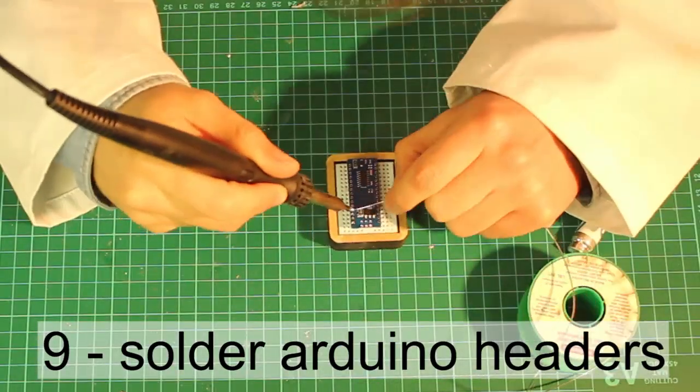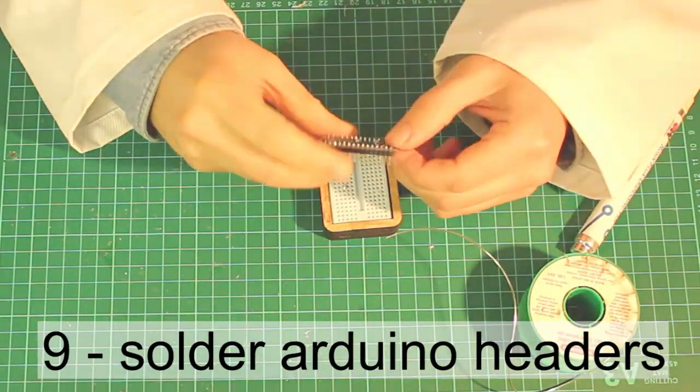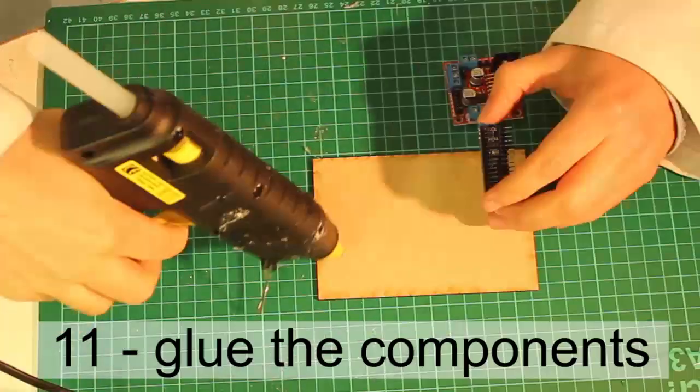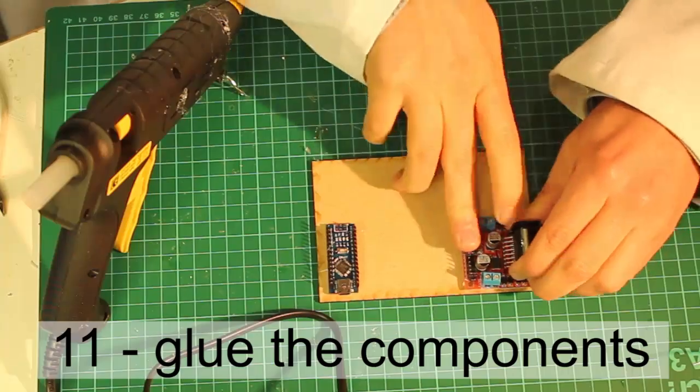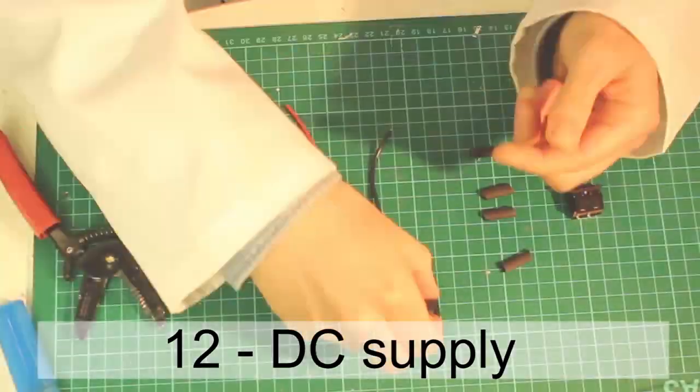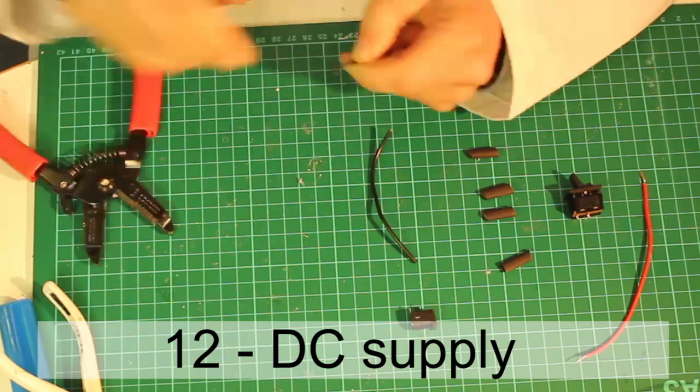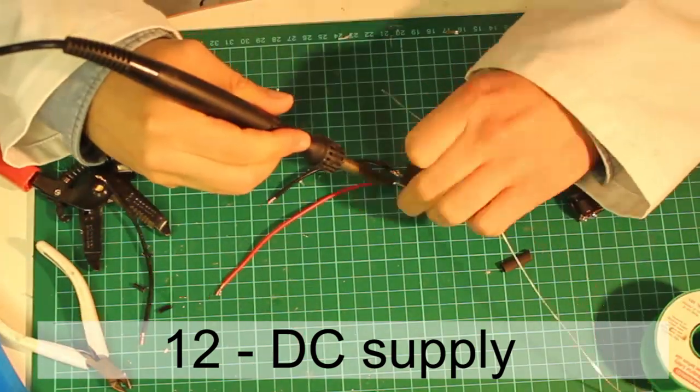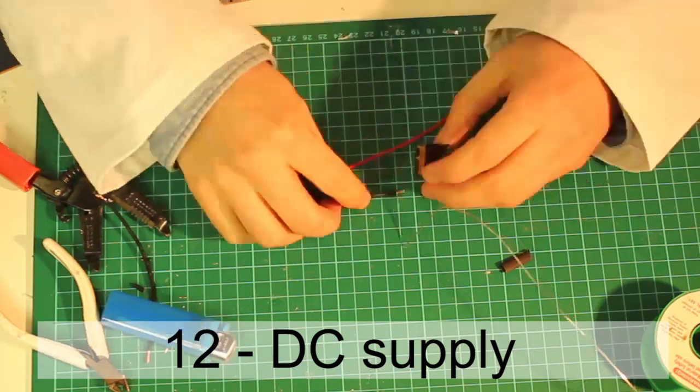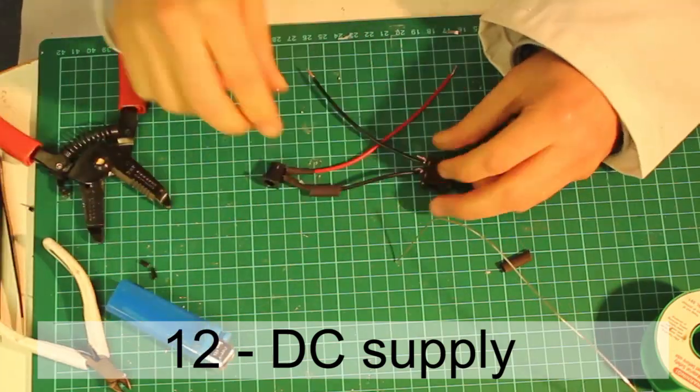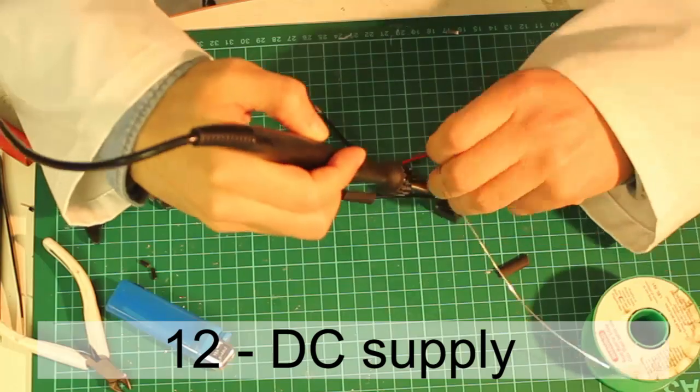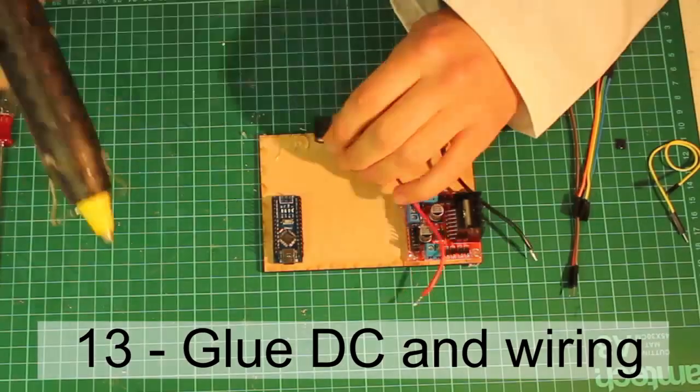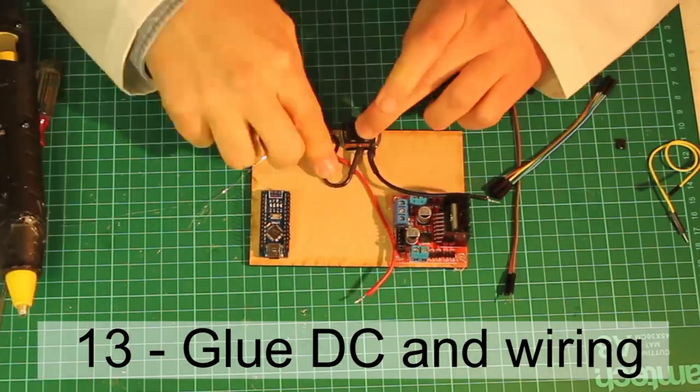Solder the headers of the Arduino backwards. For the power supply, get a positive wire and a negative wire and solder them to the DC barrel. You can apply shrink tubes to make it more secure. Solder the other end of the negative wire into the switch and another wire into the switch. Apply shrink tubes and tin the ends. Glue the DC barrel and the power switch.